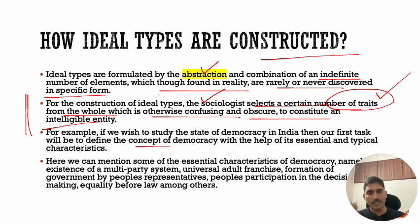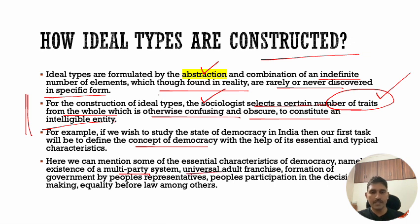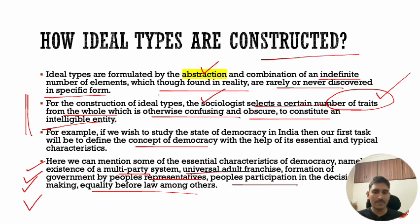If we consider the example of democracy — particularly in the context of India — to define the ideal type of democracy, a sociologist will mention some essential characteristics such as: existence of a multi-party system, universal adult franchise, formation of government by people's representatives, people's participation in decision making, and equality before law. These characteristics are not necessarily all found in one particular country's democracy, but these are the ideal conditions cherry-picked from different countries' democratic systems. Combining all these gives you the ideal type of democracy.